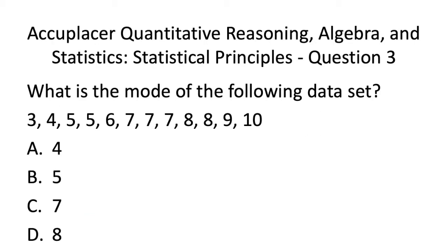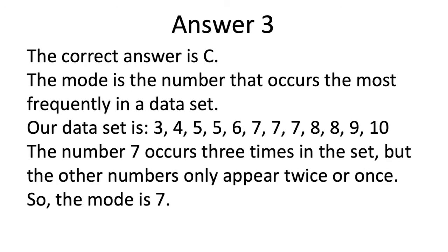Going on now to Acuplacer QAS Statistics Practice Test Question 3. The correct answer is C. The mode is the number that occurs the most frequently in a data set. As you can see, the number 7 occurs 3 times in the set, but the other numbers only appear twice or once. So the mode is 7.